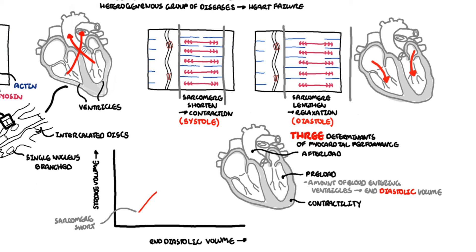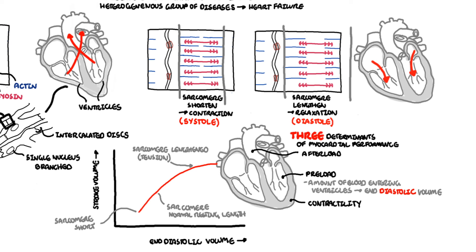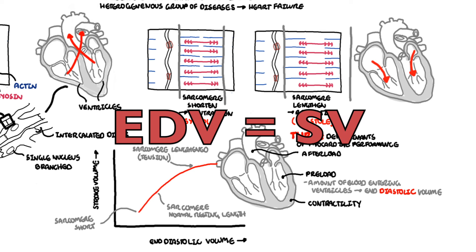To put it simply, as more blood enters the ventricles during diastole, this increases the length of the resting sarcomere, which builds up tension — kind of like a spring. Tension builds up as the ventricles fill with more blood, and then during systole, when the sarcomere shortens, it has all this tension and so it increases the contractile force and therefore the stroke volume. An increase in end-diastolic volume therefore increases stroke volume normally.